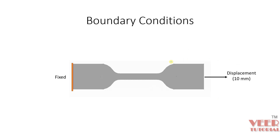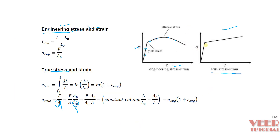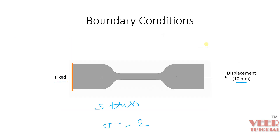The boundary condition in our problem is to fix the part from one side, the same as in physical testing. We are going to apply a displacement of 10 mm in the other direction and check the stresses in the part. We will also plot the stress-strain curve, just as we discussed. With this information we are going to solve this problem in the next lecture.